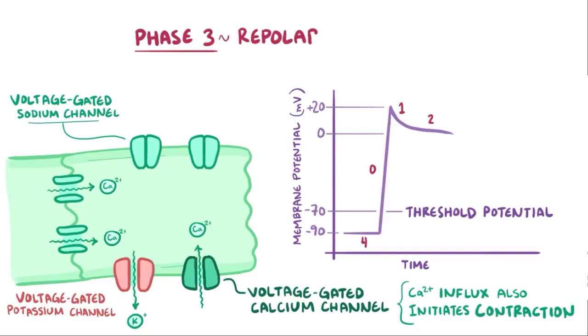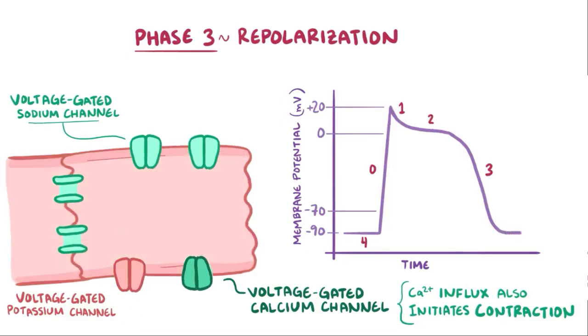During phase 3, or repolarization, the calcium channels close, but the potassium channels stay open, resulting in a net outward positive current. At the same time, ion pumps start to move calcium ions out of the cell as well, and that causes the heart to relax. Eventually, the membrane potential gets back to negative 90 millivolts, and we start over with phase 4 again.